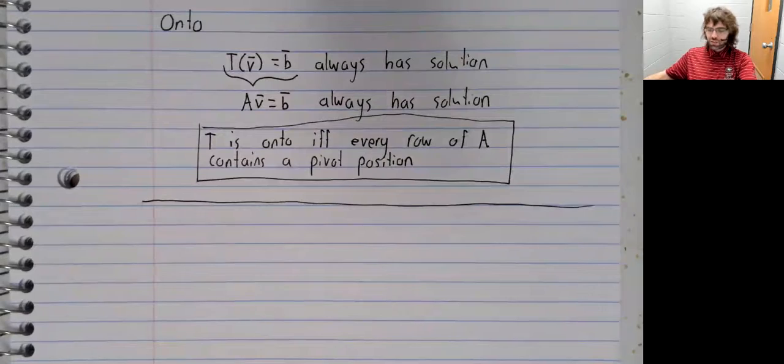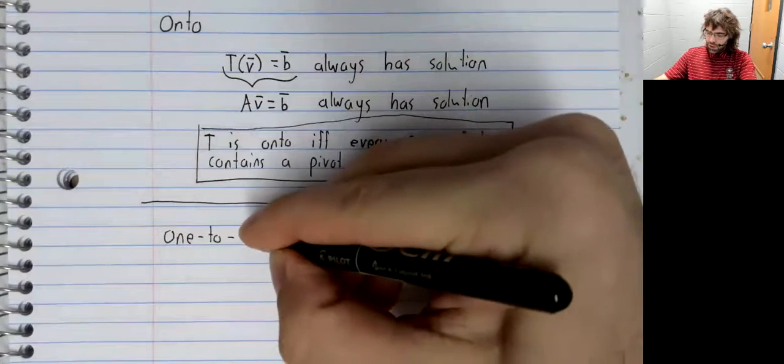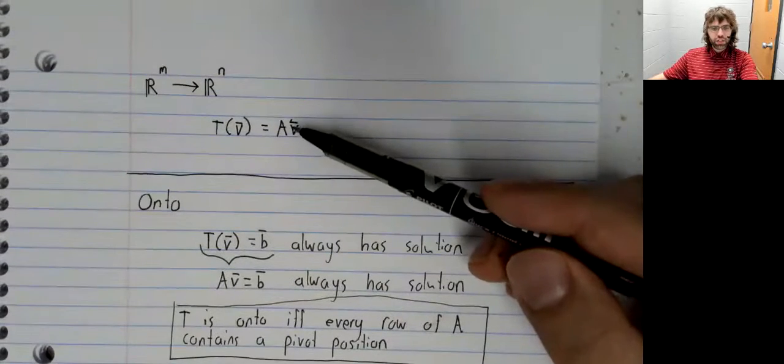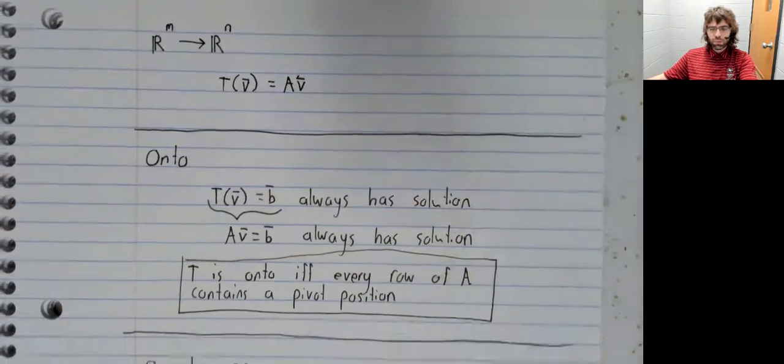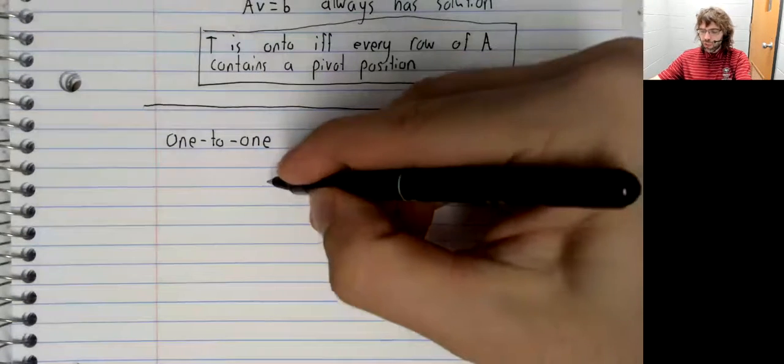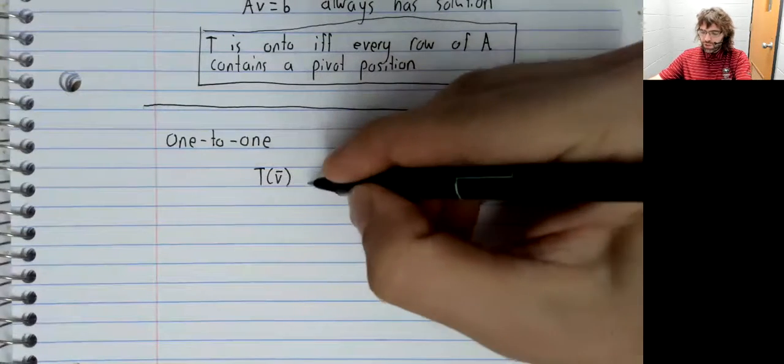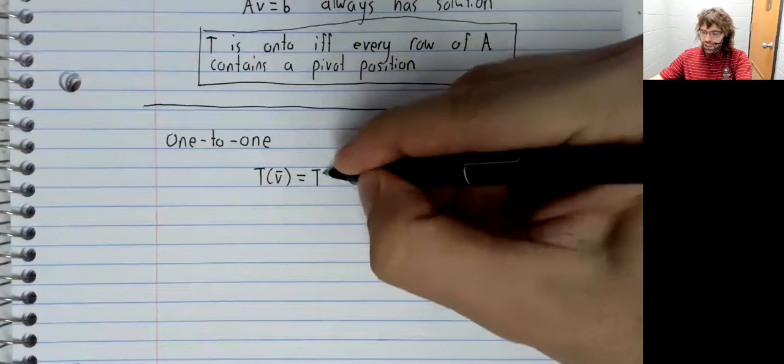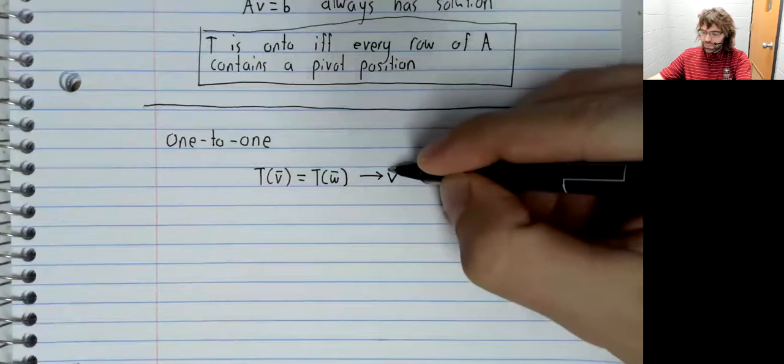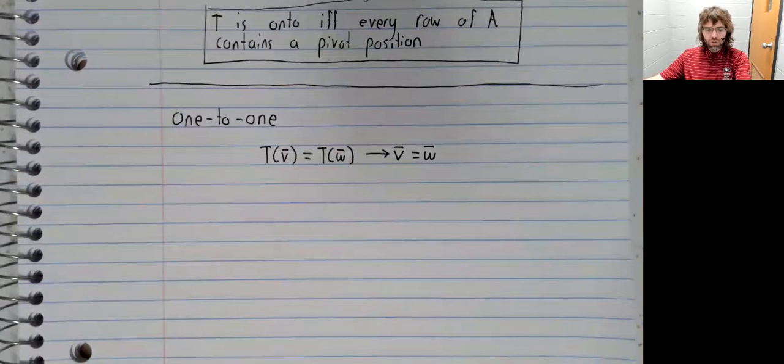Now, we'll address the question of when a linear transformation of this form is one to one. So a transformation is one to one if T of V equaling T of W implies that V equals W.